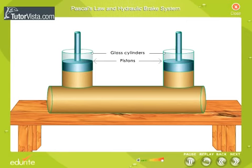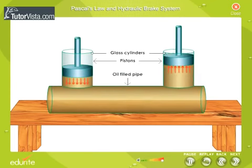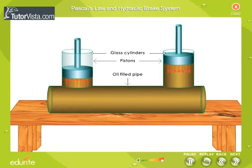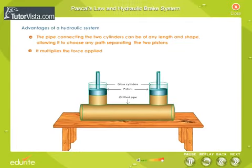Two pistons are fitted into two glass cylinders filled with oil and connected to one another with an oil-filled pipe. If you apply a downward force on one of the pistons, the force is transmitted to the second piston through the oil in the pipe. Since oil is incompressible, the efficiency is very good. Thus, most of the applied force appears at the second piston. The advantage of hydraulic systems is that the pipe connecting the two cylinders can be of any length and shape, allowing it to choose any path separating the two pistons.